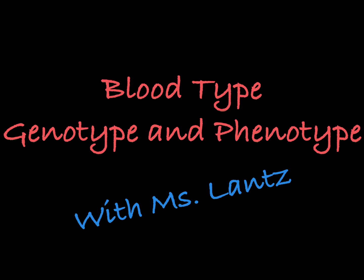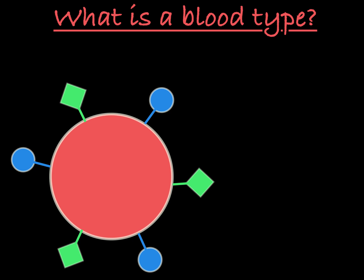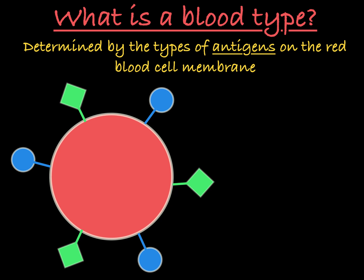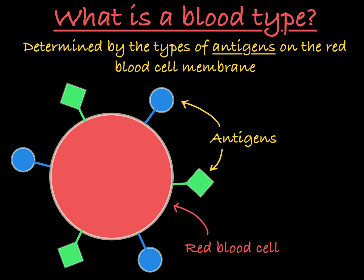In this video, I'll walk you through how blood type is determined. Your blood type is determined by the kinds of carbohydrate tags on the outside of your red blood cells. These tags are called antigens.